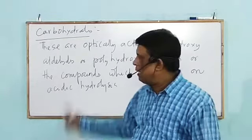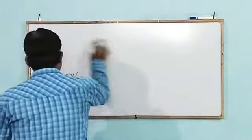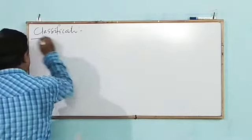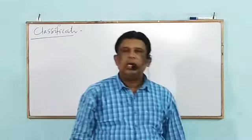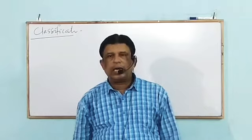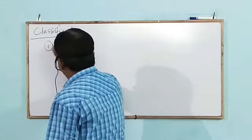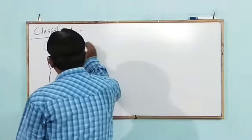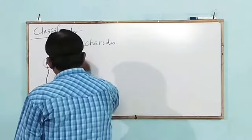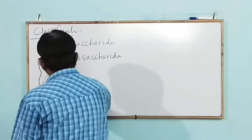Next we switch over to the classification of carbohydrates. On the basis of hydrolysis product, carbohydrates are classified into three types: point 1 — monosaccharide, point 2 — oligosaccharide, and point 3 — polysaccharide.